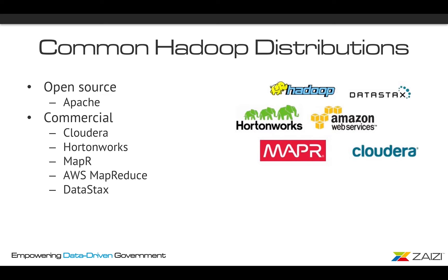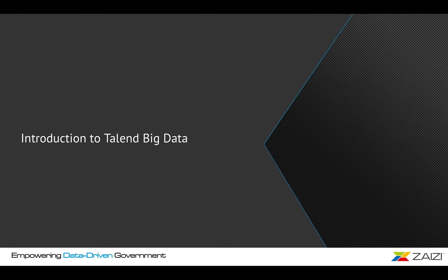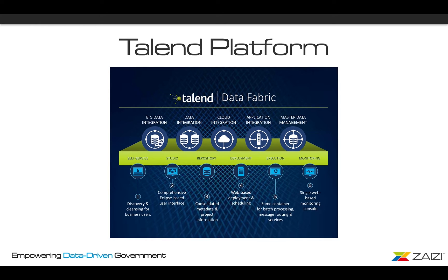What are the common Hadoop distributions? There is the open source Apache Hadoop distribution, which is the one shown before. There are also some commercial distributions like Cloudera, Hortonworks, MapR, AWS MapReduce, and Datastax. Let's move on to Talend big data.